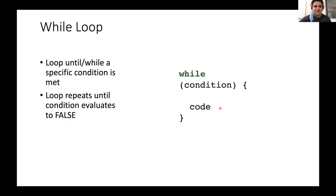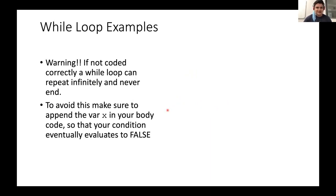Now moving on to while loops. While loops are a type of loop that repeats until a specific condition is met — meaning your code inside the brackets is repeated until your condition evaluates to false. One important thing: because while loops repeat until the condition is false, there's a chance they can run infinitely and never end. That's why you need to modify your variable inside the loop to ensure the condition eventually evaluates to false.